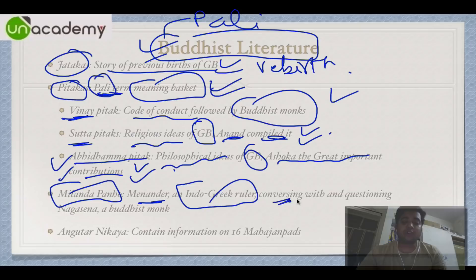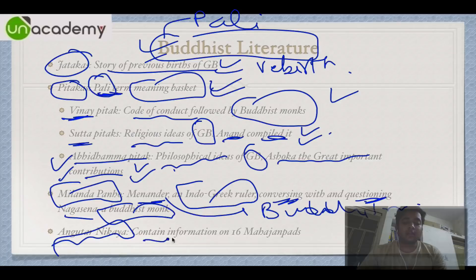Milindapanho: Menander was an Indo-Greek ruler who conversed with and questioned Nagasena, a Buddhist monk, and eventually converted to Buddhism — that text is the Milindapanho. Then we have Anguttara Nikaya, which contains information on the 16 Mahajanapadas. Just remember the book names, not necessarily all the Mahajanapadas.